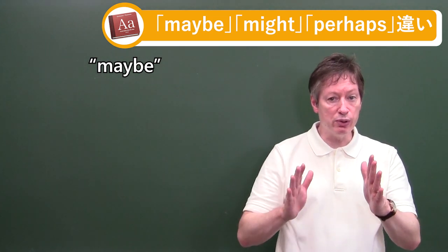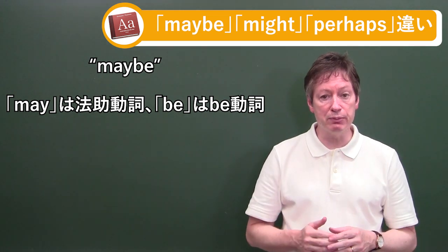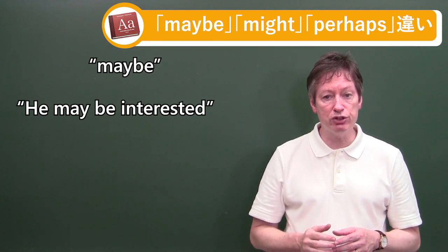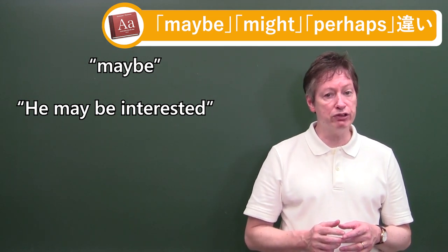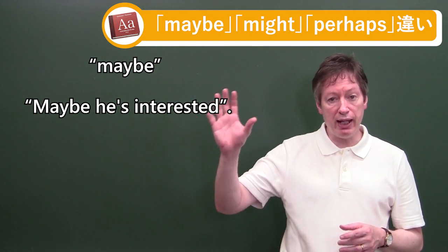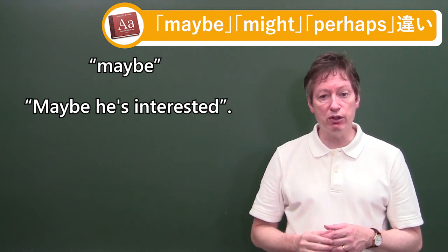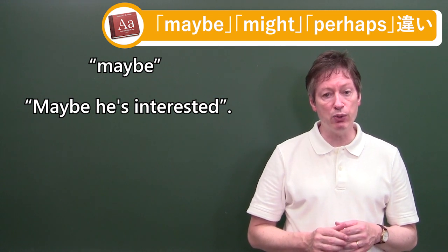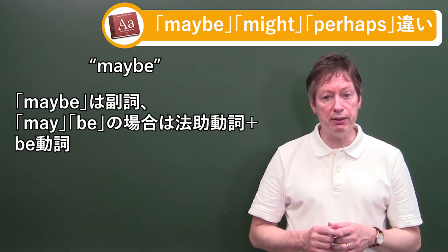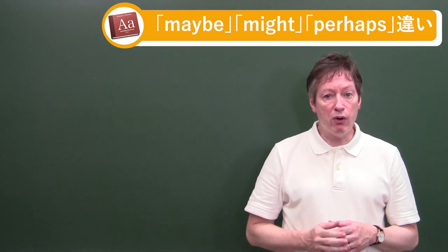Now I can also put maybe as two words, but it's going to change the grammar in this case. May as being a modal verb and be being a be verb. So I can also say he may be interested. There's no change in the meaning, but the grammatical structure changes. Maybe he's interested. Notice that maybe comes at the front and he serves as the subject may be interested, but there's no difference in the meanings at all. I just wanted to put that in as well. That wasn't requested but I thought it might be pretty valuable to learn.